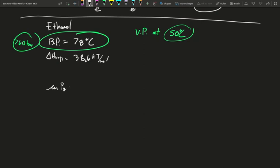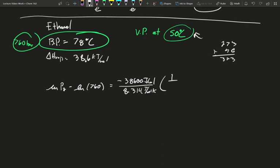Natural log of pressure 2 minus natural log of 760 Torr is going to equal negative 38,600 joules per mole over 8.314 joules per mole Kelvin. One over temp 2, which was 50 degrees Celsius. So 273 plus 50, 323. 323 Kelvin for 78 degrees Celsius, which is 351. I'm going to multiply this out.